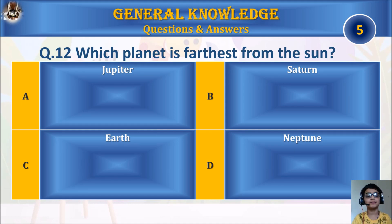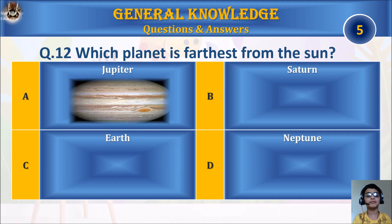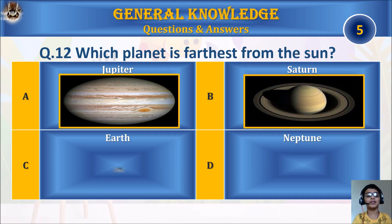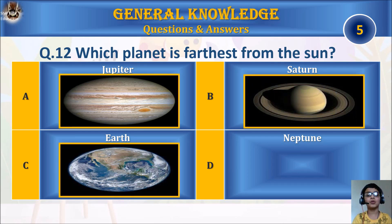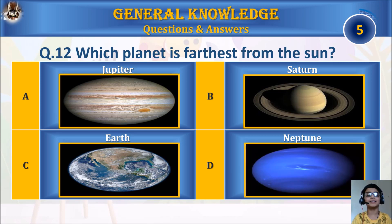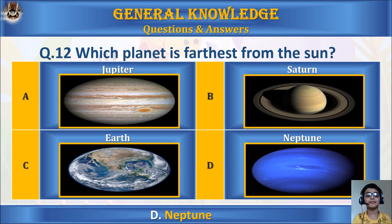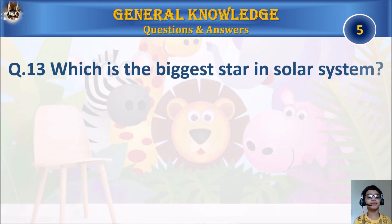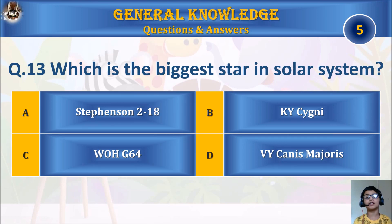Question 12: Which planet is farthest from the Sun? A. Jupiter, B. Saturn, C. Earth, or D. Neptune? Your time starts. The answer is D. Neptune.